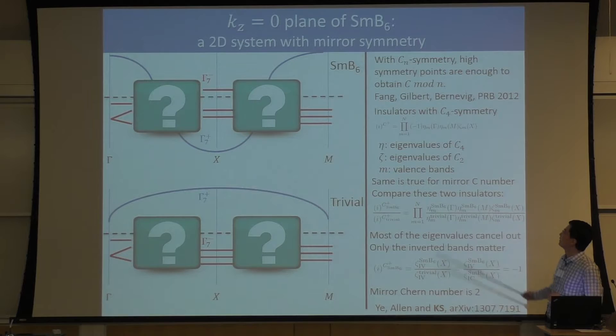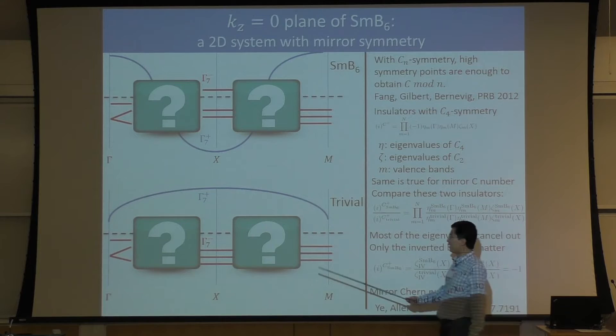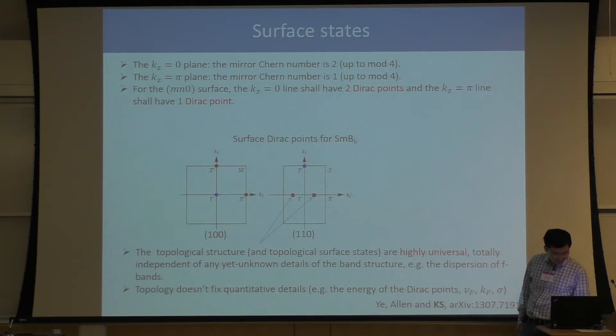The formula of Bernevig actually tells us the Chern number up to modulo n, where n is the rotational symmetry — n-fold rotation symmetry for the lattice. So the price one pays by using only limited momentum points is that you don't get the Chern number itself, you get the Chern number modulo four in this case.